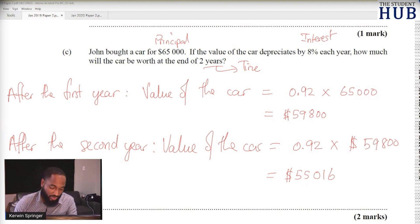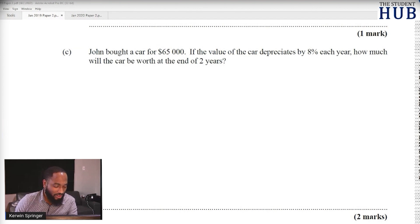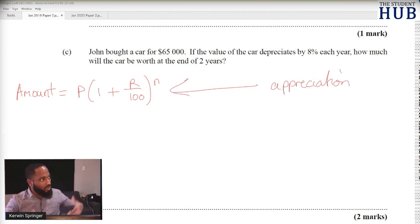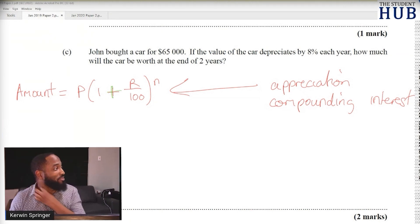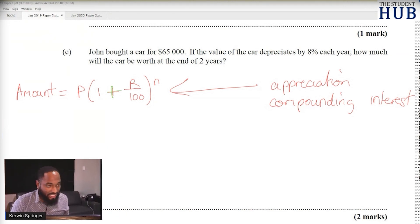Let's try another method. You could use the formula: amount equals P times open bracket 1 plus r over 100 close bracket to the power of n. This is for appreciation, meaning if the value of something is going up or compound interest. But depreciation would be like a car decreasing in value, so you'll have amount equal to P times 1 minus the rate over 100 to the power of n.